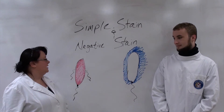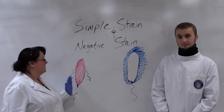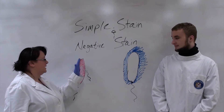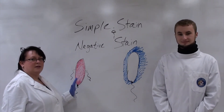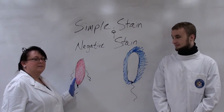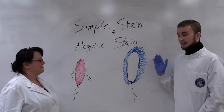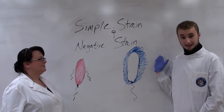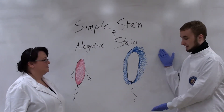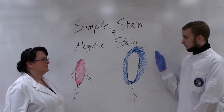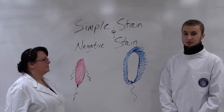Now a simple stain — because the bacteria is slightly negative — we use a positive stain, so it actually stains the bacteria itself so we can see the actual bacteria morphology. On the other hand, a negative stain uses a negatively charged dye which the bacteria repels, giving us something where the dye will stain the background but not the actual organism.